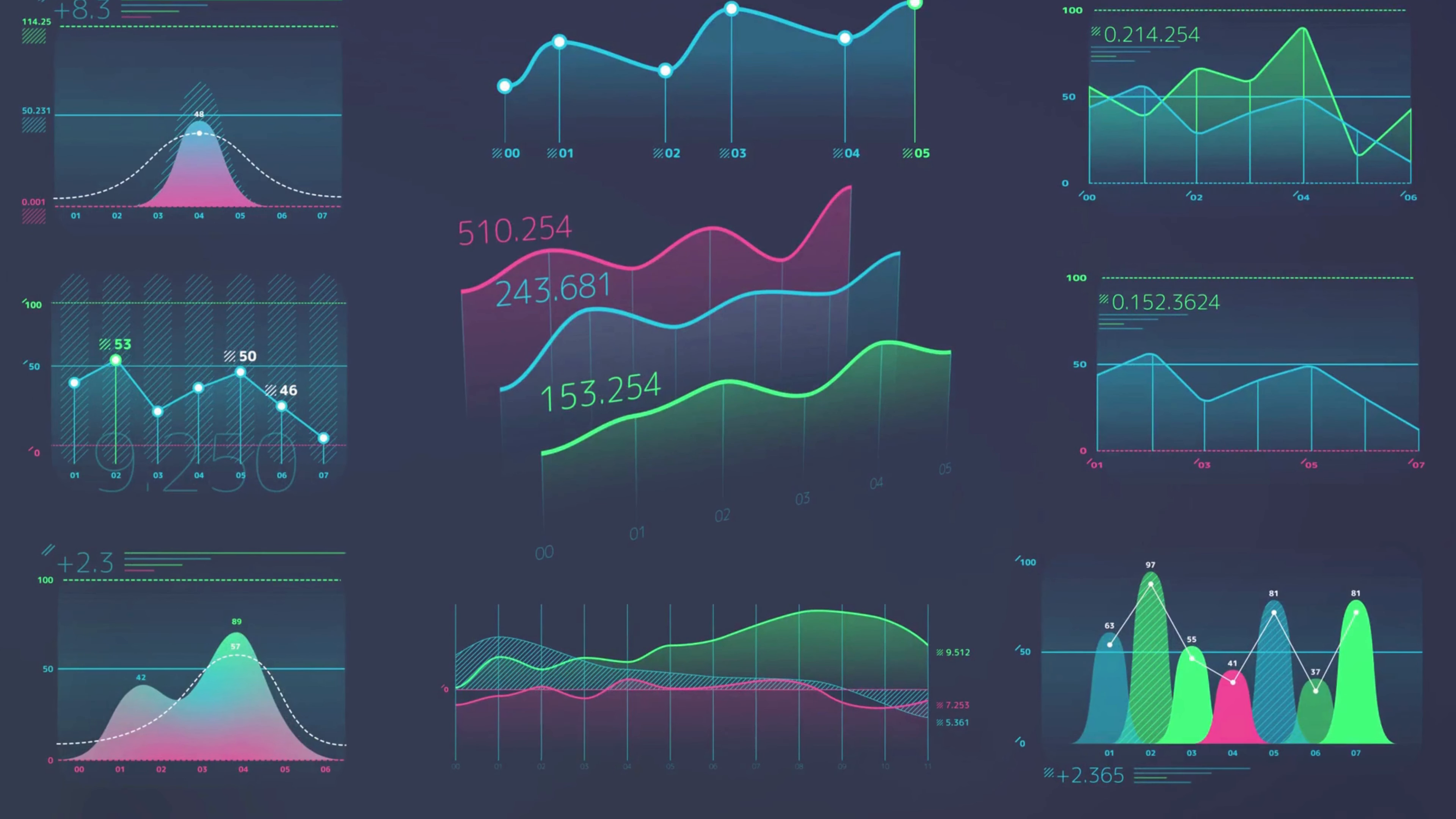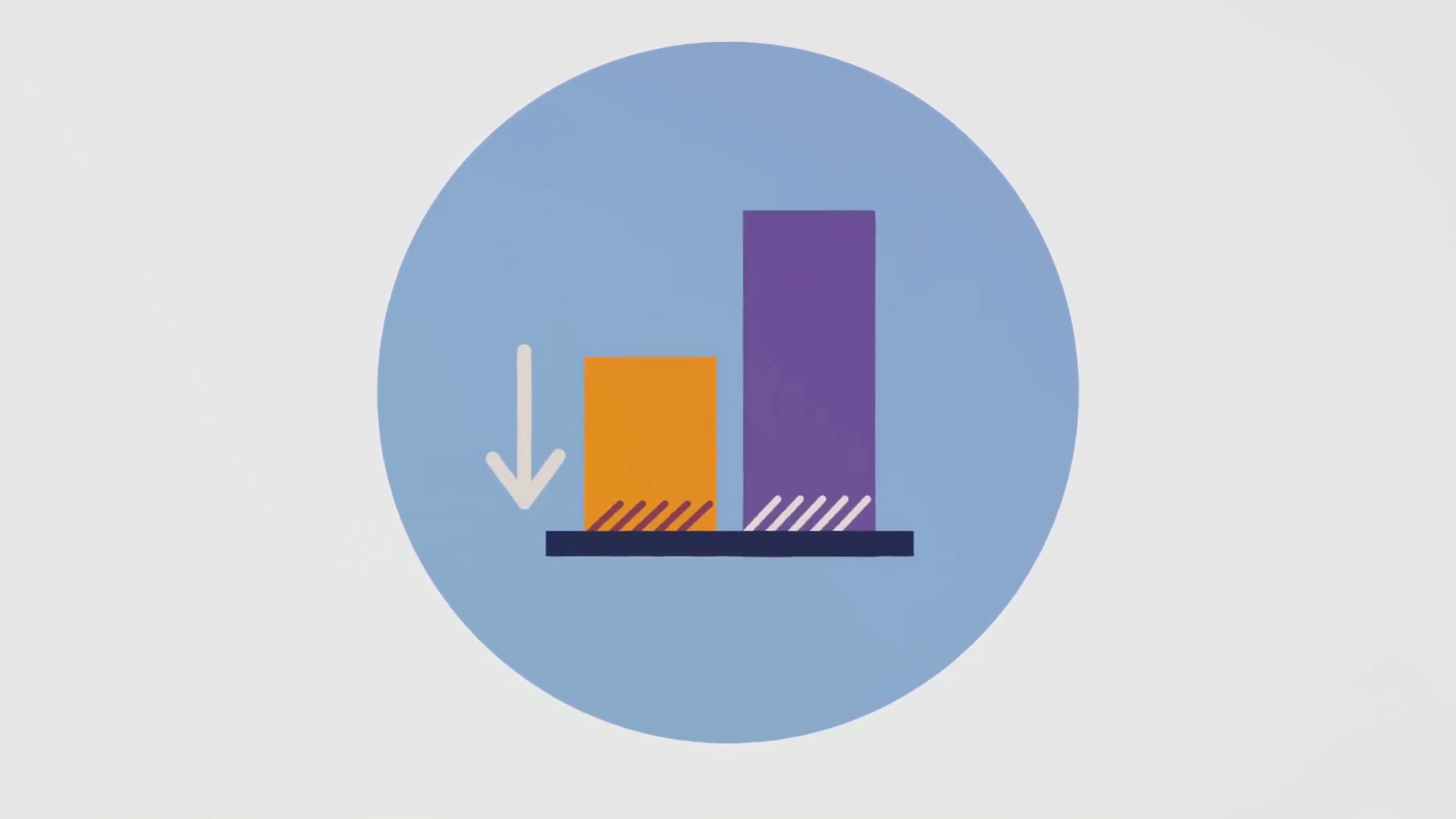Again, sigma comes to the rescue. While the median gives us a central point, sigma provides the context. How much data varies around that central point, it's like knowing the heart of the city and also understanding how far the suburbs stretch.